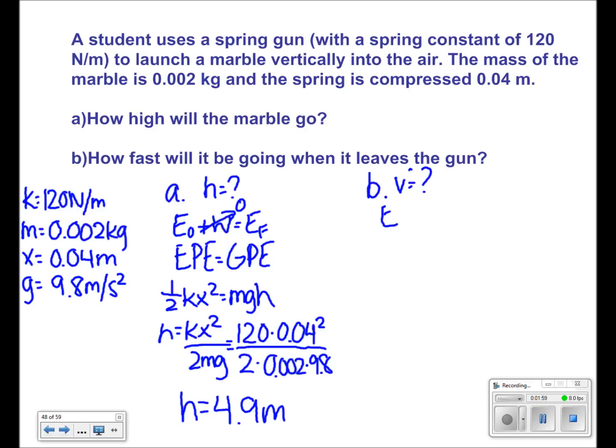So again, we know that initial energy plus work equals final energy. And again, we do not have work, so we cross that out. So initial energy, which is elastic potential energy, equals final energy, which in this case is kinetic energy.